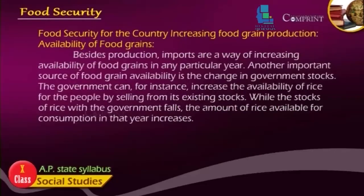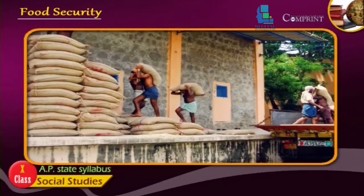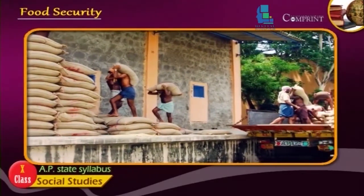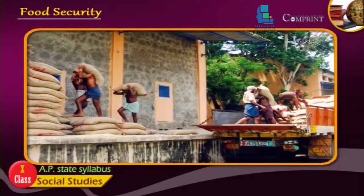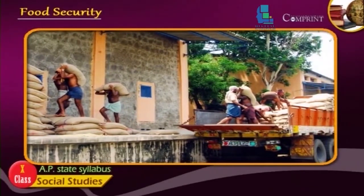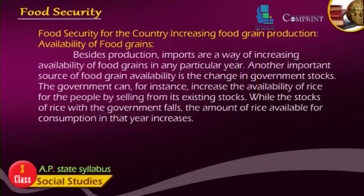Besides production, imports are a way of increasing availability of food grains in any particular year. Another important source of food grain availability is the change in government stocks. The government can, for instance, increase the availability of rice for the people by selling from its existing stocks. While the stocks of rice with the government fall, the amount of rice available for consumption in that year increases.